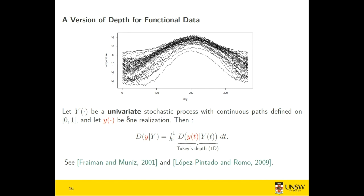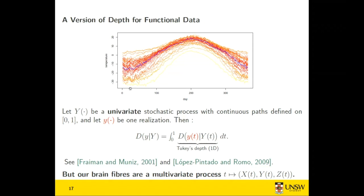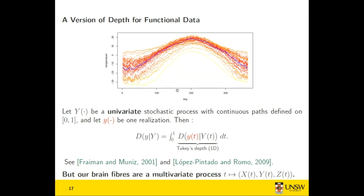When we apply this method to a set of functions, the blue function with the highest depth is right in the middle, and the yellow ones with the lowest depth are outliers. This seems interesting because brain fibers can be thought of as functions. But our brain fibers live in 3D space, so we need a multivariate process where each point on the fiber is determined by x(t), y(t), and z(t). We need a generalization of functional depth to multivariate space.